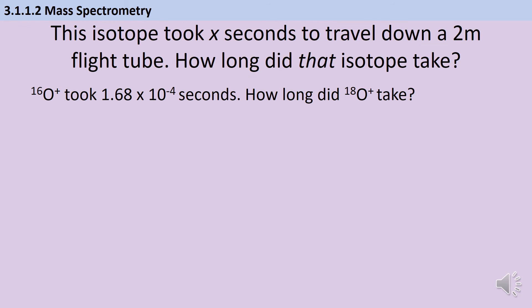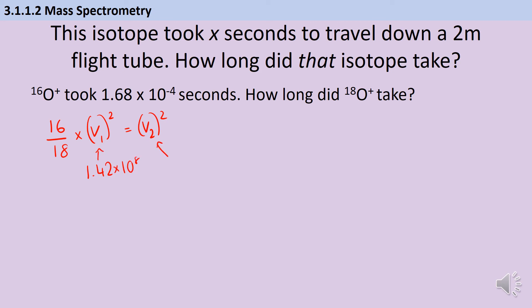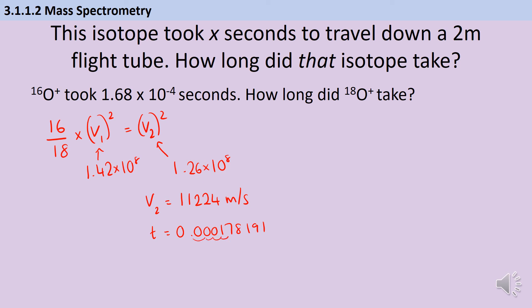In the second example, going through the whole process gives us (16/18) × v₁² = v₂². V₁² has a value of 1.42 × 10⁸, so v₂² ends up as 1.26 × 10⁸, giving a velocity of 11,224 metres per second. Therefore the time taken is 1.78 × 10⁻⁴ seconds.